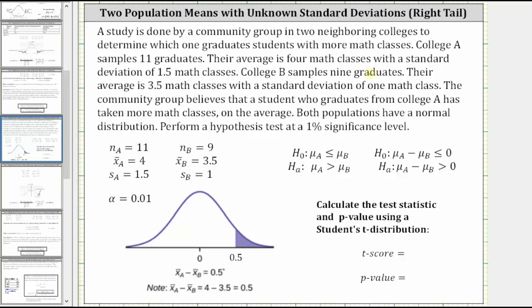College B samples nine graduates. And therefore, N sub B is nine. Their average is 3.5 math classes with a standard deviation of 1 math class. And therefore, X bar sub B is equal to 3.5. S sub B is equal to 1.